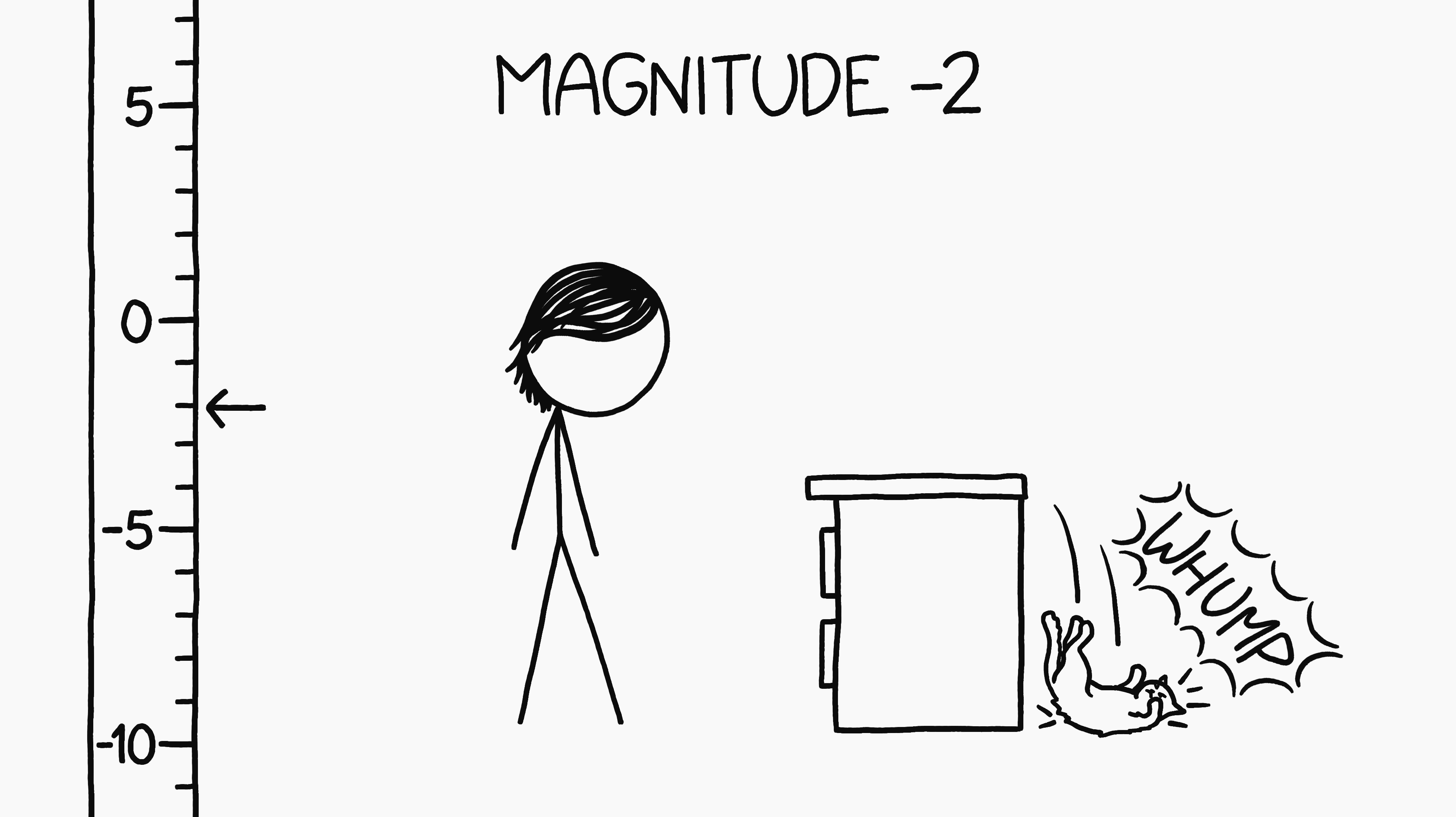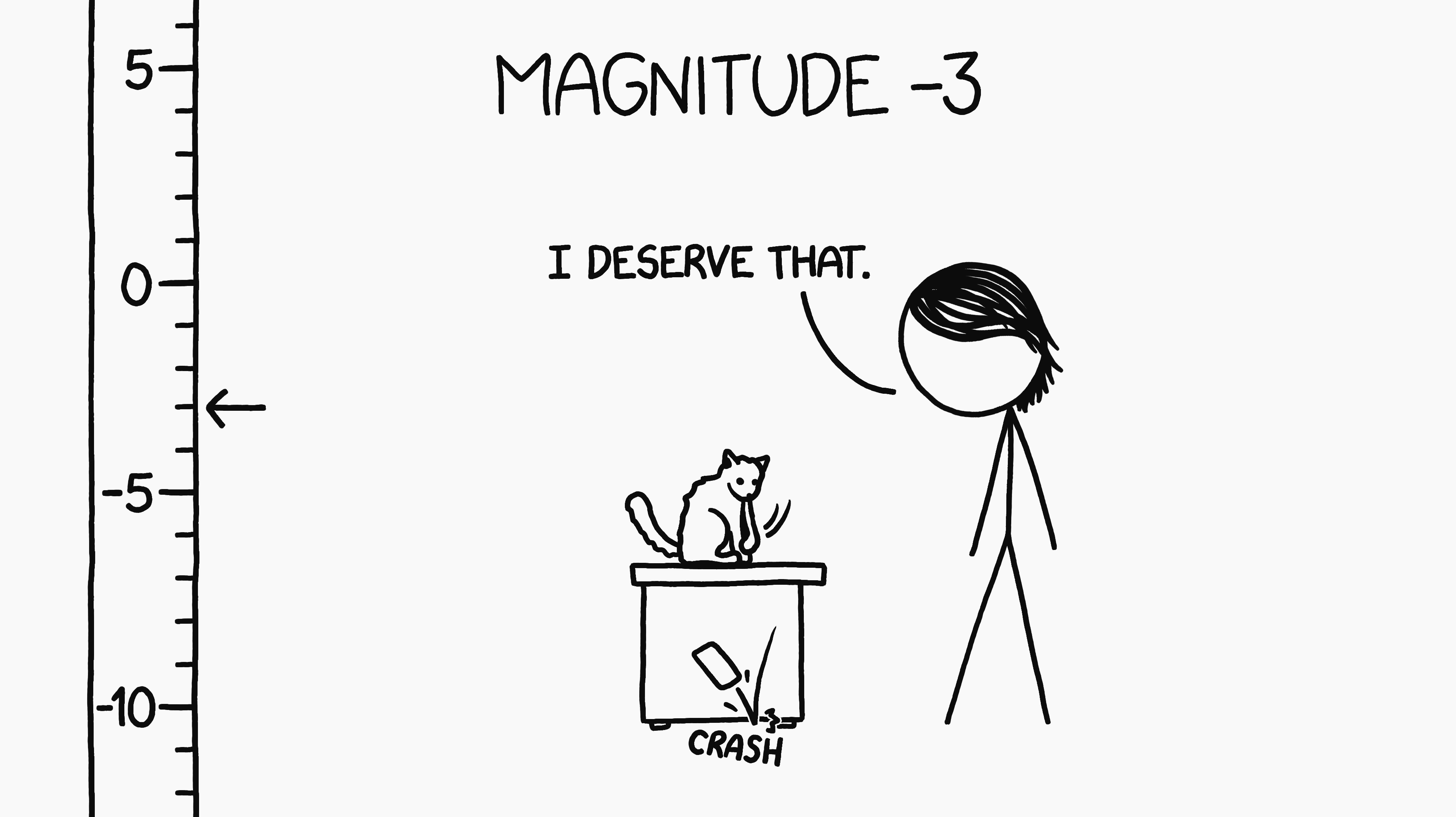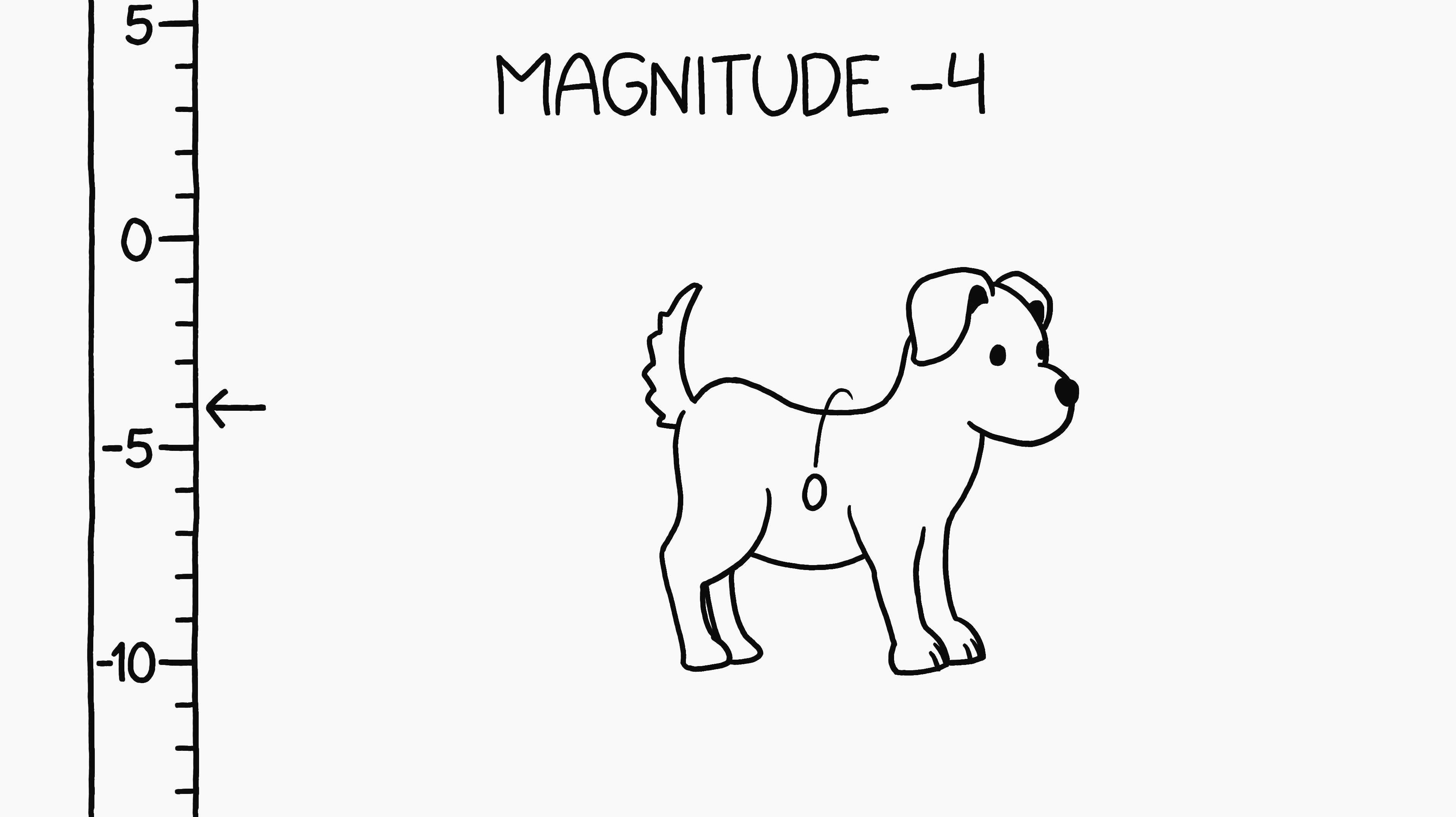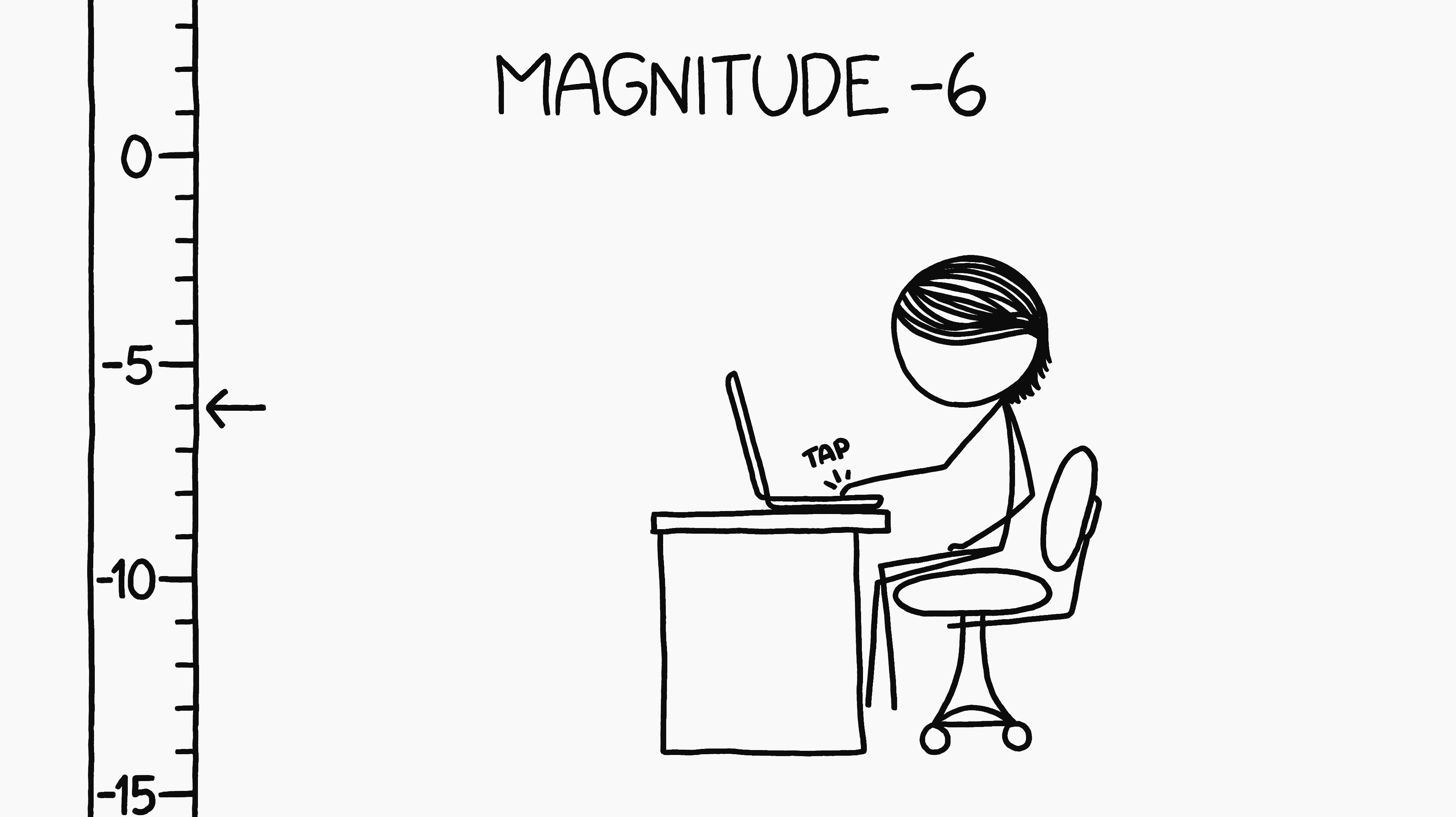A cat falling off a dresser would have a magnitude of negative 2. A cat knocking your cell phone off your nightstand would have a magnitude negative 3. Magnitude negative 4 is like a penny falling off of a dog. Magnitude negative 5 is a key press on an IBM Model M mechanical keyboard.